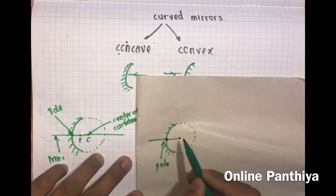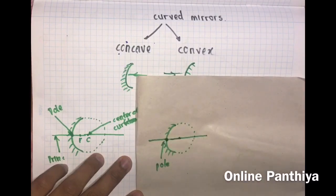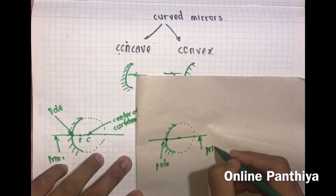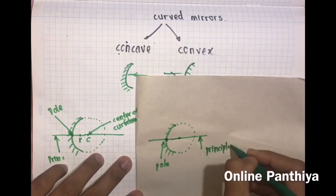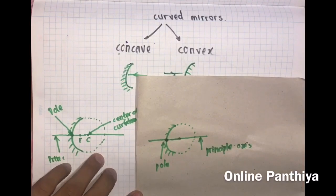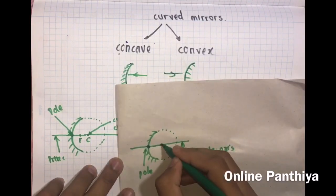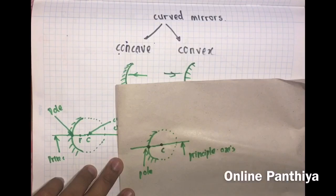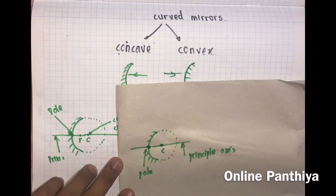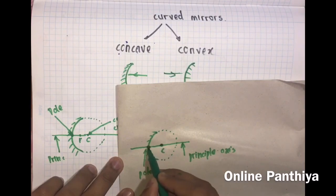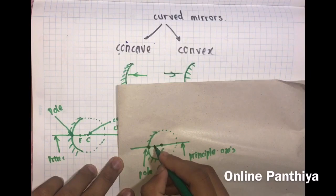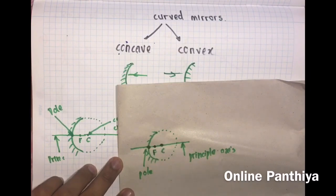If you join the pole and draw a line through it, that line is called the principal axis — you know this from the lenses part. This is the center of curvature, which I'll call C. Just like lenses, even these mirrors have a focal point. The focal point is the center point between the pole and the center of curvature.